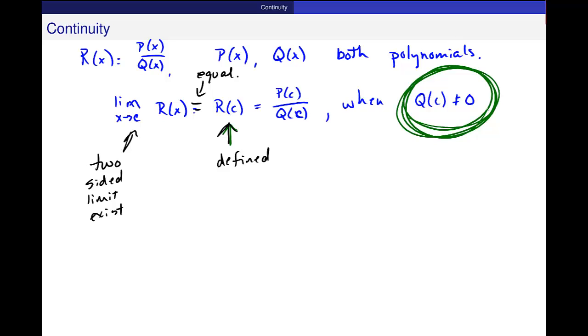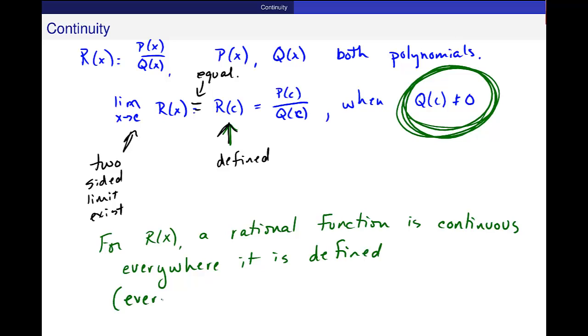So then we have this follow-on result for rational functions. For r(x), a rational function, is continuous everywhere it is defined, meaning if I'm using the other notation, everywhere that q(x) is not equal to 0, or q(c) maybe is not equal to 0. So I get rid of these c values just like we did for the domain and find out where it's continuous. Let's look at an example of that one.